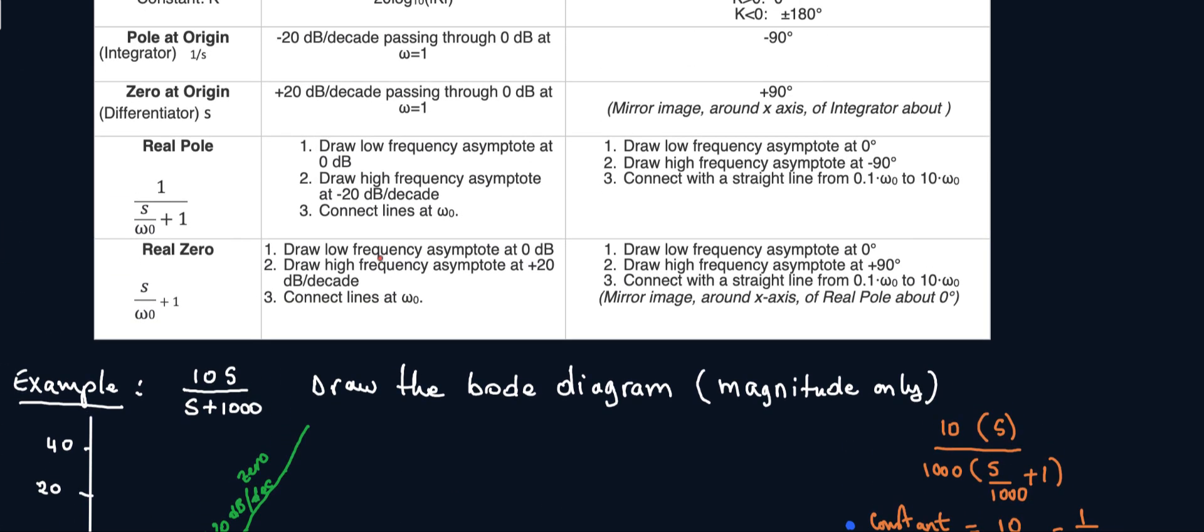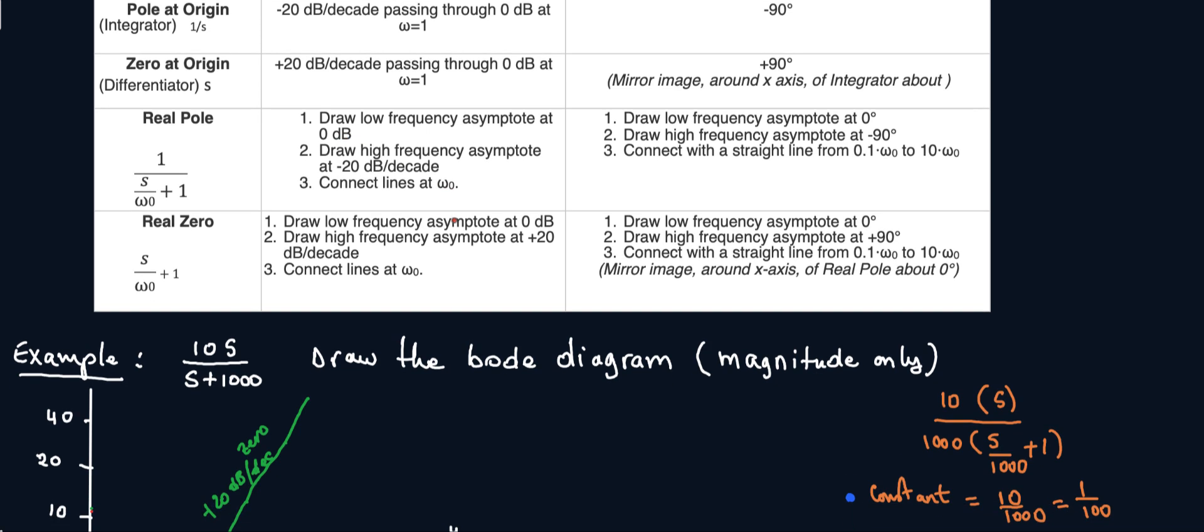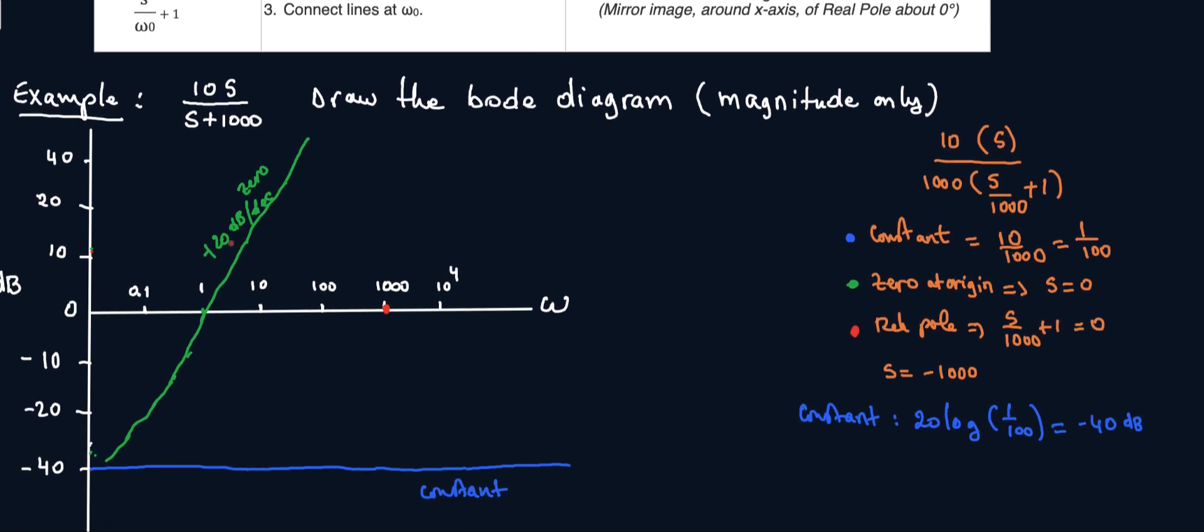What is, so draw it at zero until you hit omega zero, and then you have a negative slope. So zero dB until you hit omega zero, which is 1000. As soon as you hit 1000, then I have a negative slope of, that was almost straight. Okay. So this is my real pole at minus 20 dB.